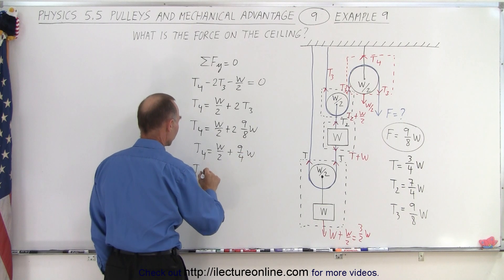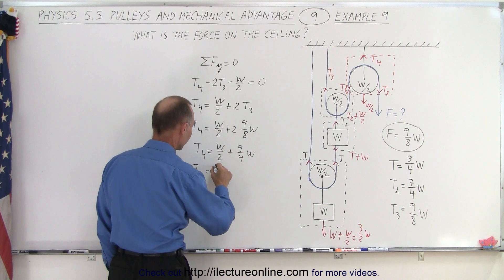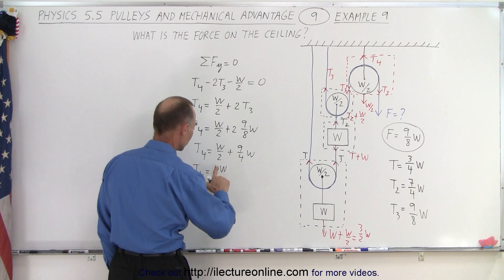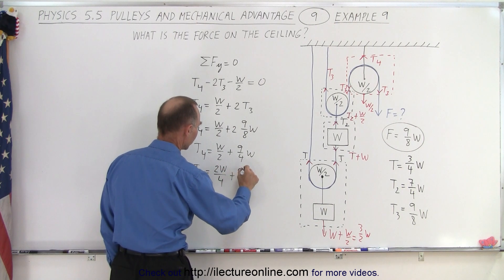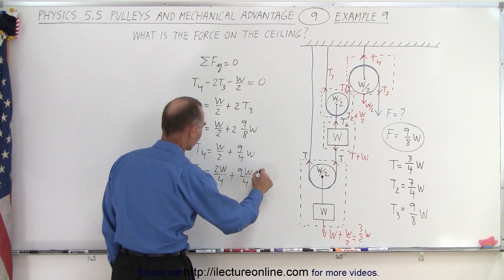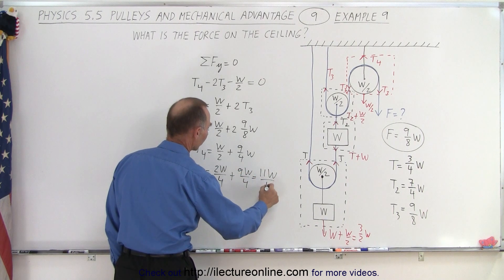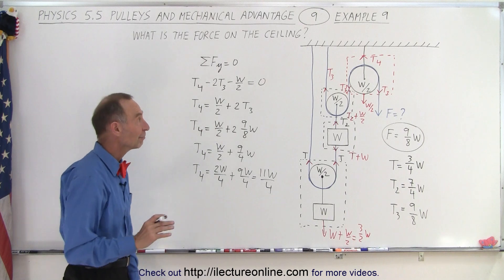And so T4 is equal to 2W over 4, plus 9W over 4, which is 11W over 4. So now we have T4 as well.